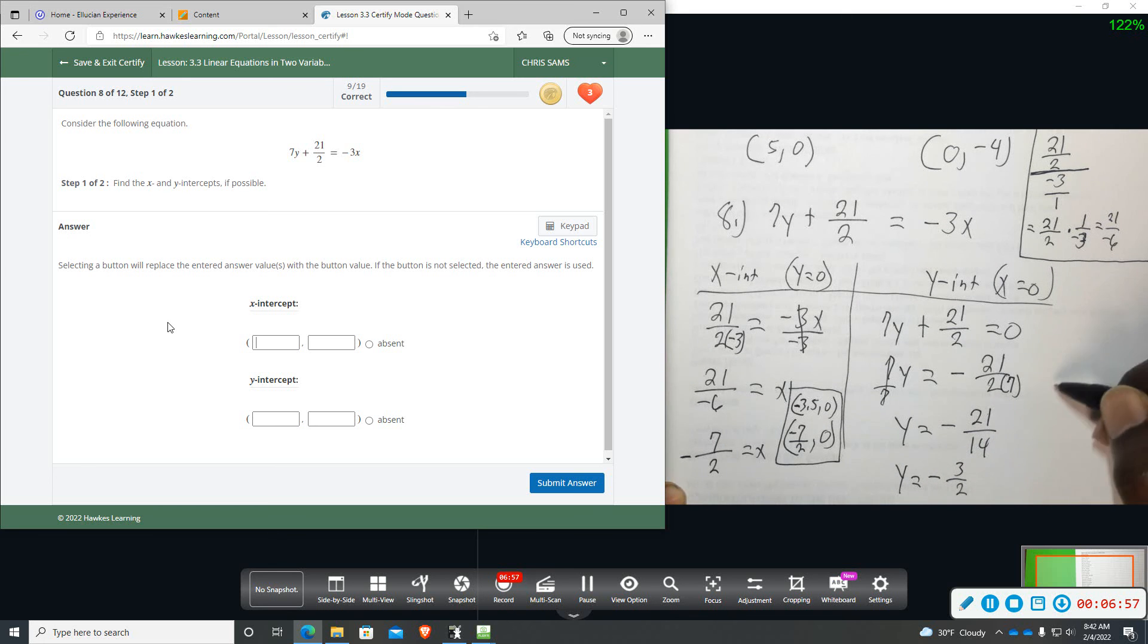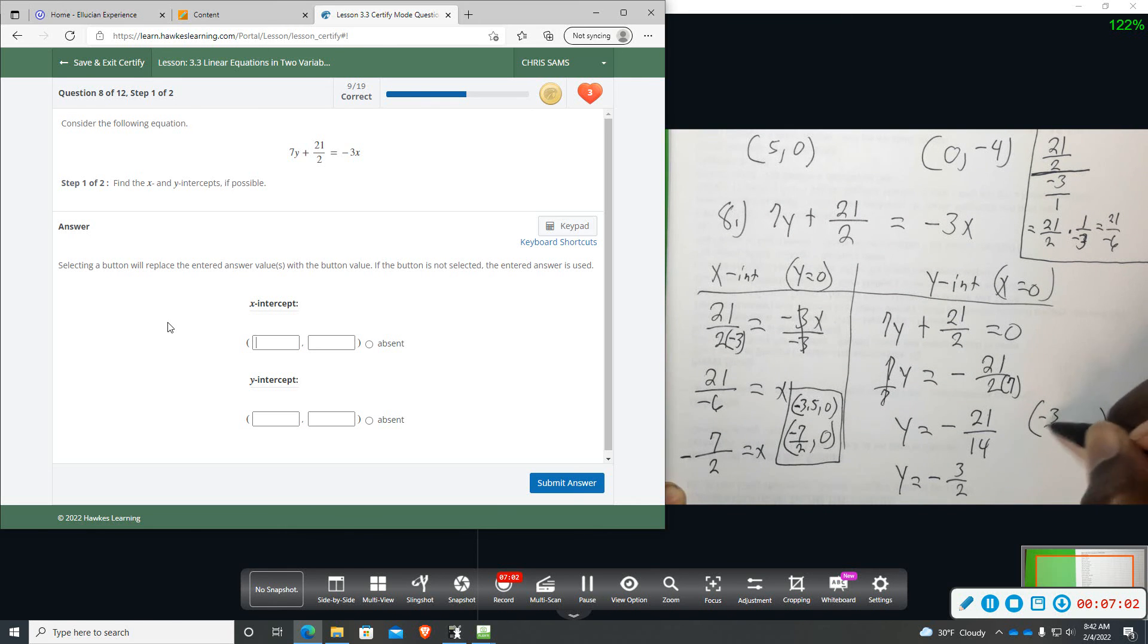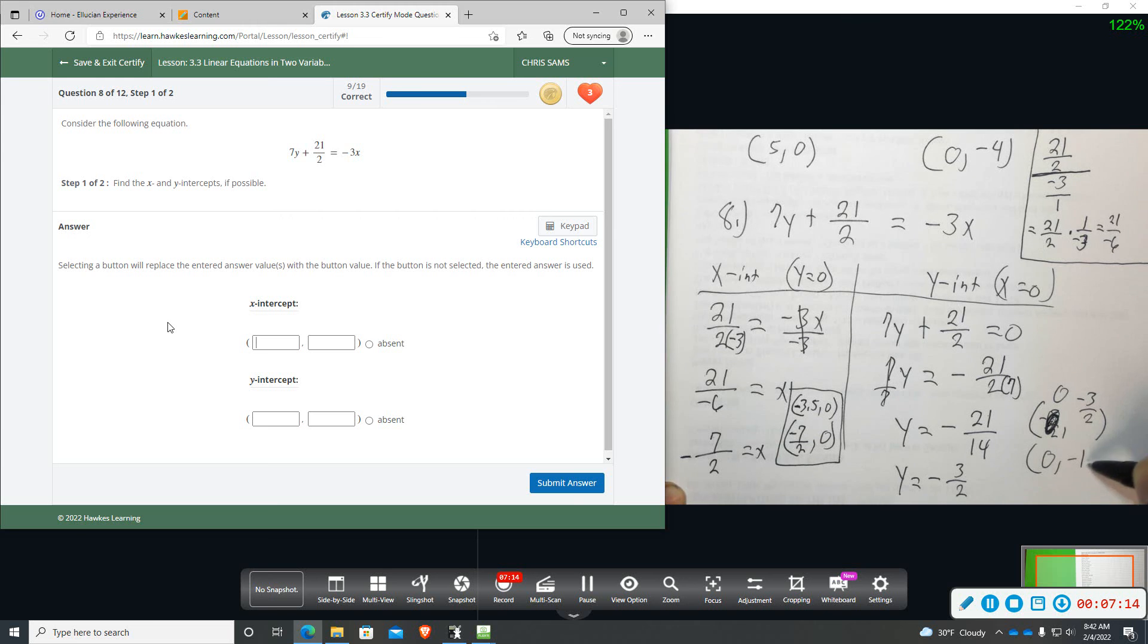So your ordered pair here is going to be 0 and then negative 3 over 2, or as a decimal 0 and negative 1.5.